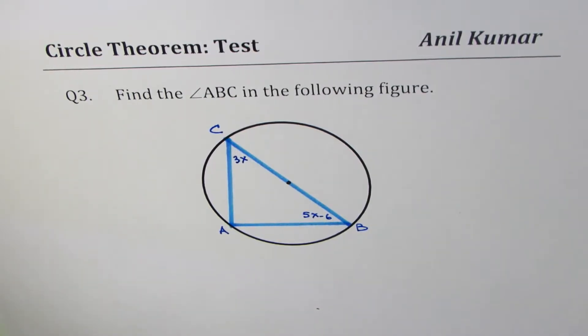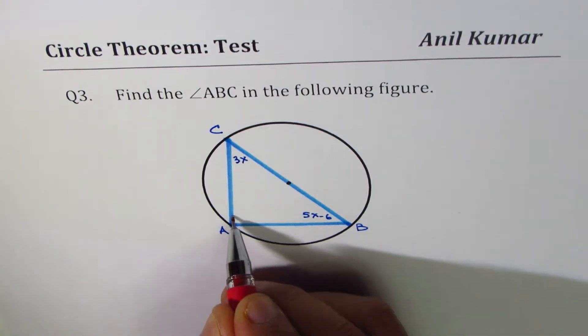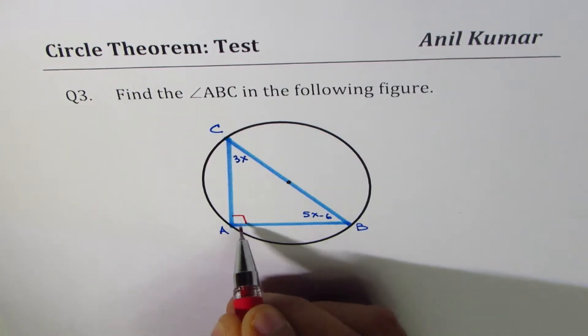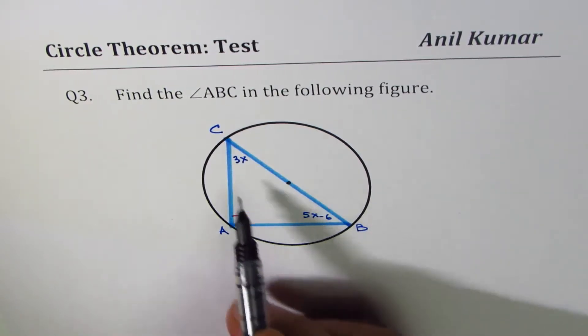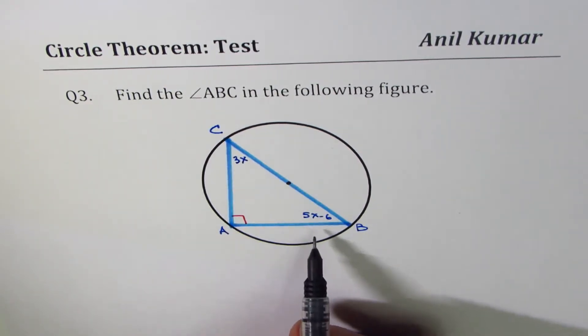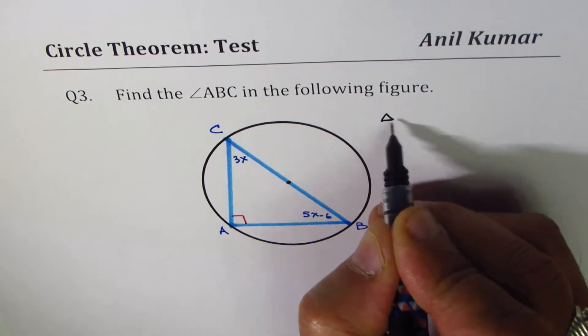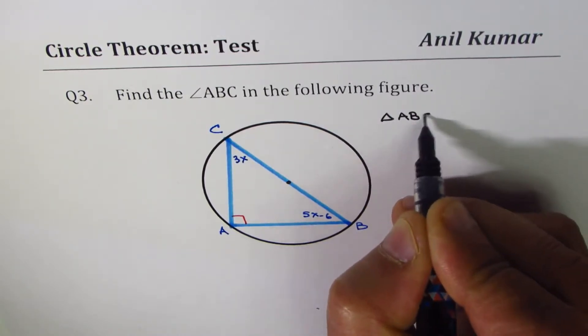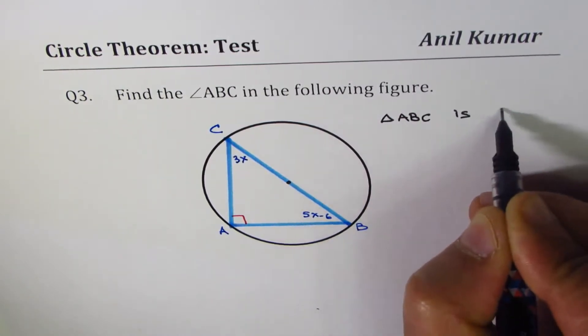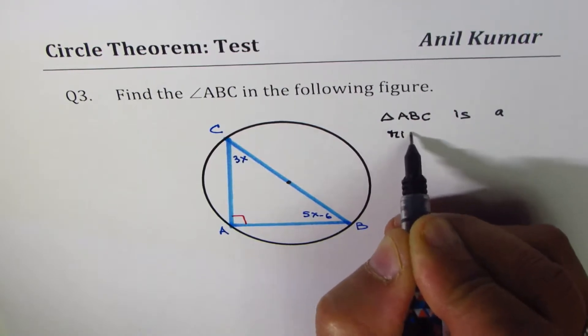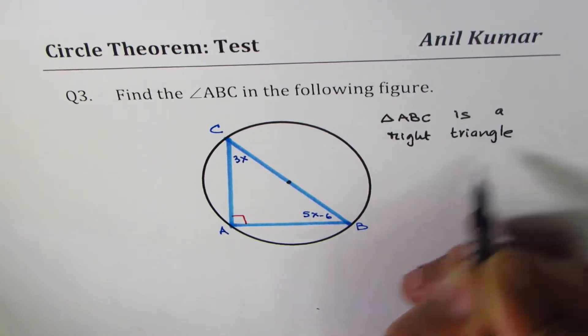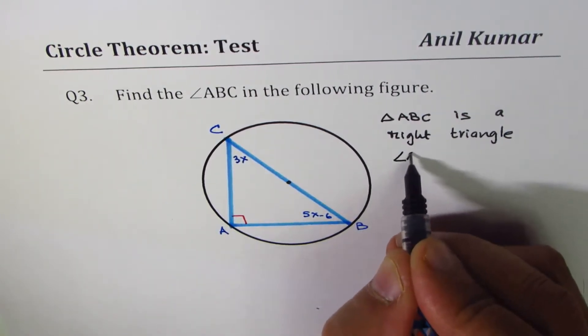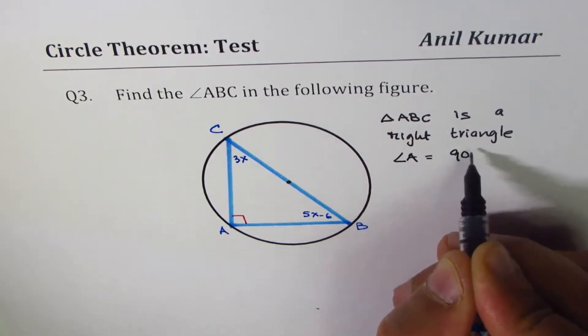From the rules which we have learned, an angle inscribed in a semicircle has to be a right angle, and therefore ABC is a right triangle. So angle A equals 90 degrees.